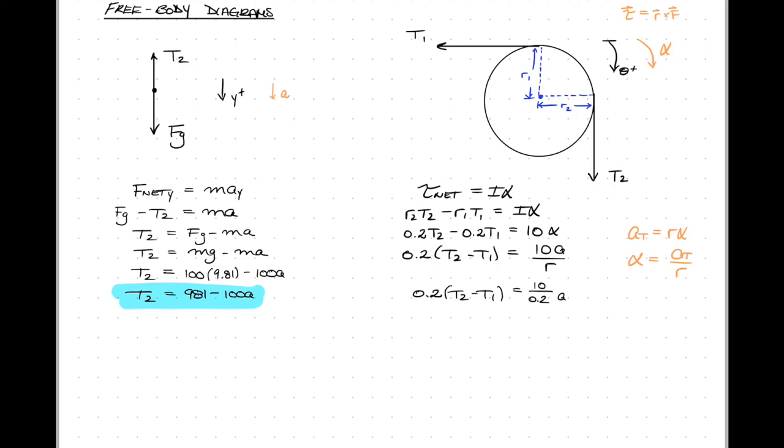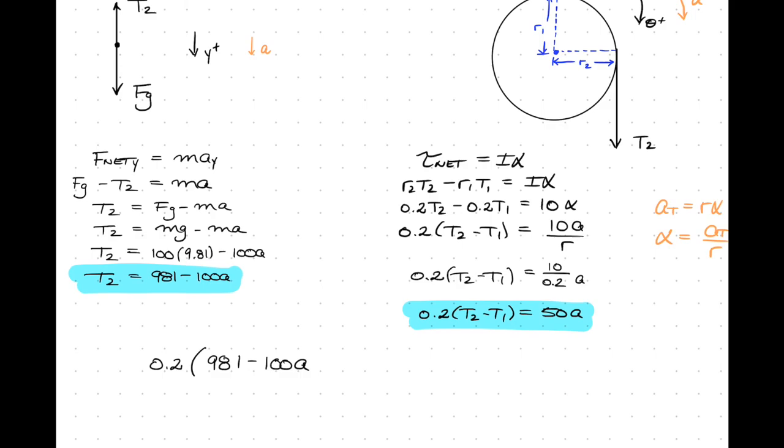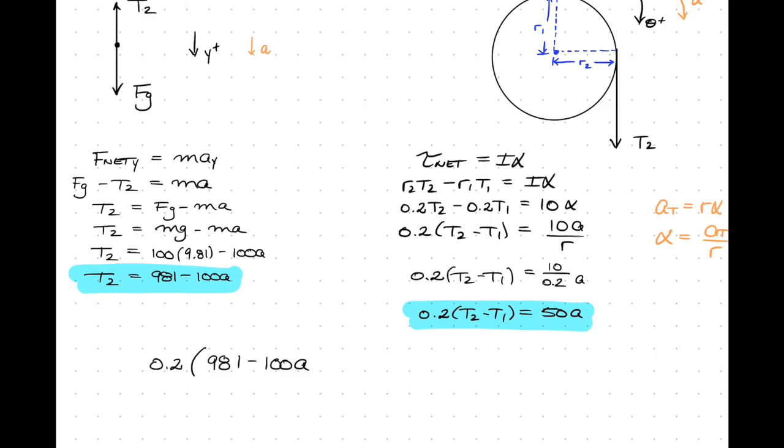So we're just going to clean this up a bit and get ready to substitute for the values of T2 and T1 that we've solved for previously, as they each simply had the a as an unknown. So let's take our T2 and substitute that in, and take our T1 and substitute that in, and simply solve for a! And there you have it! A equals 1.53 meters per second squared. Thanks for watching!